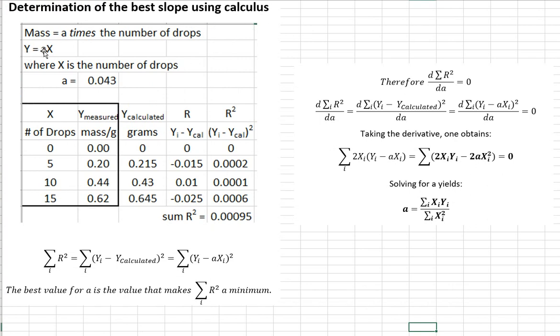The equation is y equals ax. A line going through the origin. A is the slope. Y is the mass. X is the number of drops.